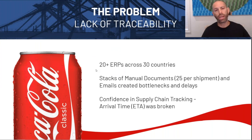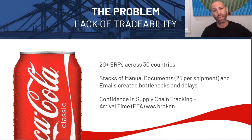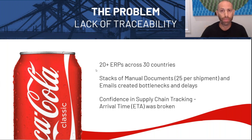Let's go into the real world and talk about a company everyone's heard of and the supply chain problem they were having: Coca-Cola. Their non-sparkling beverage company had a lack of traceability — they were getting data from over 20 ERPs around the world, across 30 countries, with 34 different bottlers handling the product and over six supply points. 25 manual documents were set up for every single shipment. Their confidence in the supply chain was completely broken — they didn't know when manual documents were coming in or where the data was coming from.